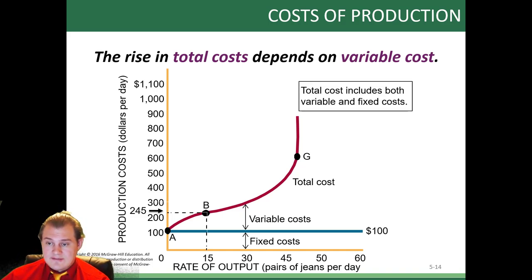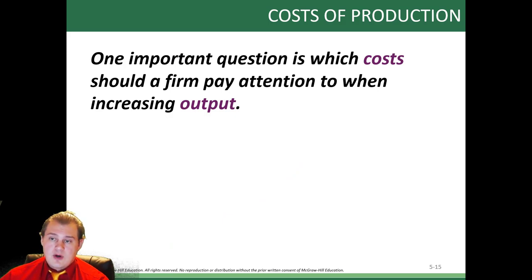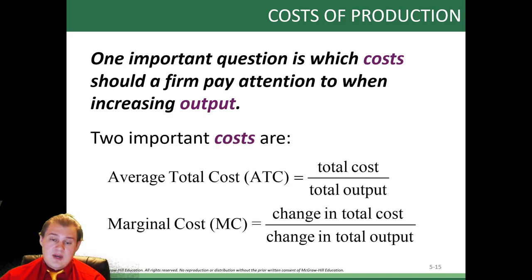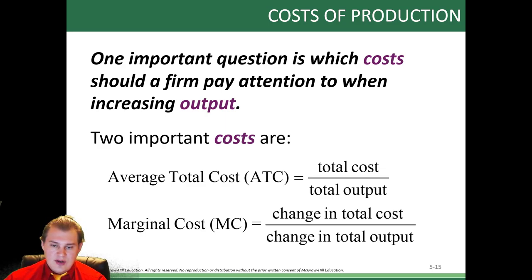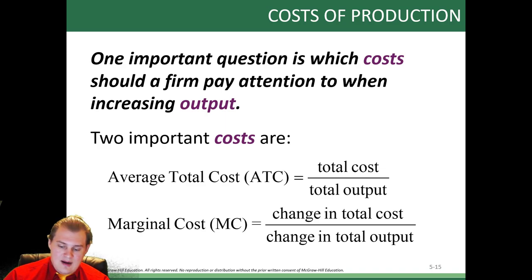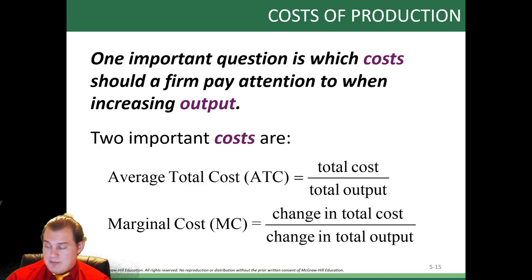Total costs are your fixed and variable combined — that's your TC. One important question is: which cost should a firm pay attention to when increasing output? You can do average total cost (ATC) — how efficient are we overall — or marginal cost (MC). ATC is total cost divided by total output. MC is the one used most when working with companies: is it worth producing one more step? ATC lets you know how efficient you are overall. MC is really important — it tells you the cost of the next units. If total cost went up by $10 but the value of output went up by $20, keep producing.